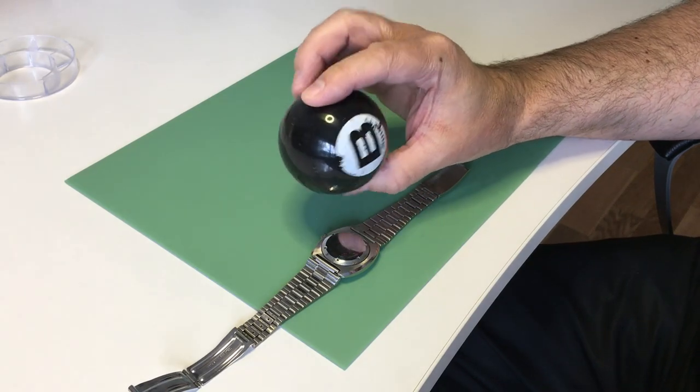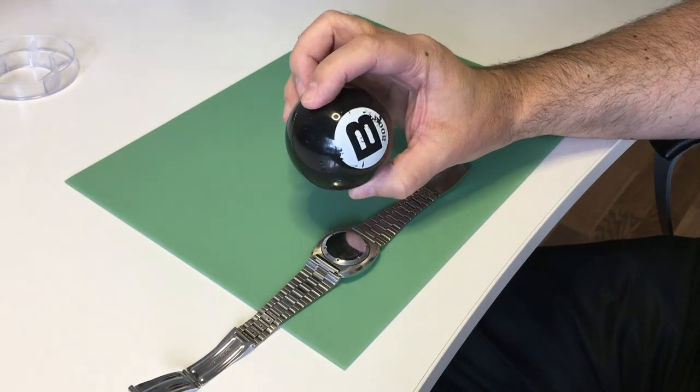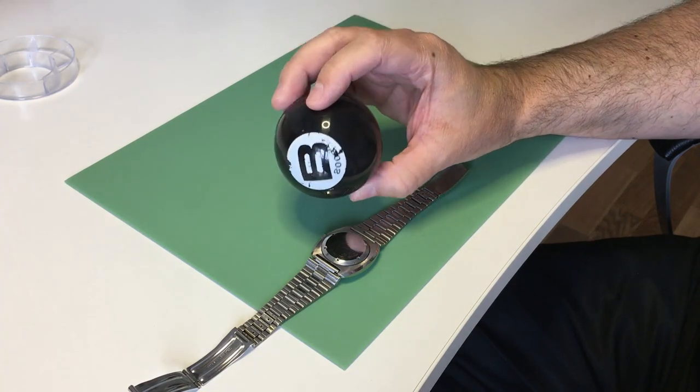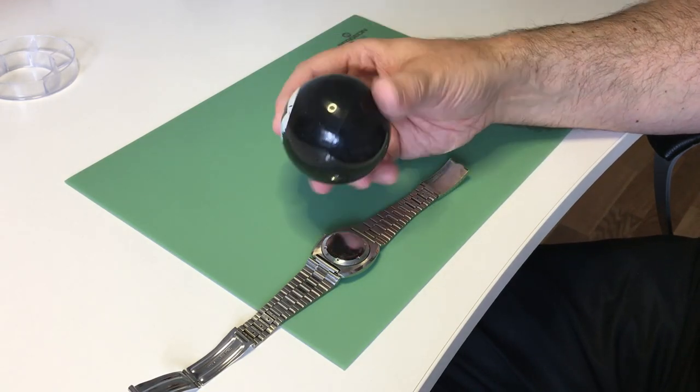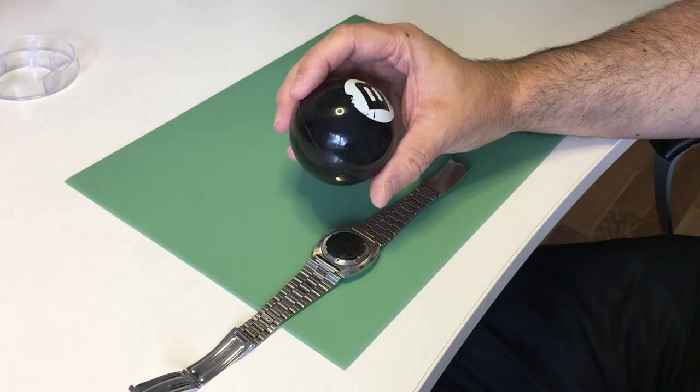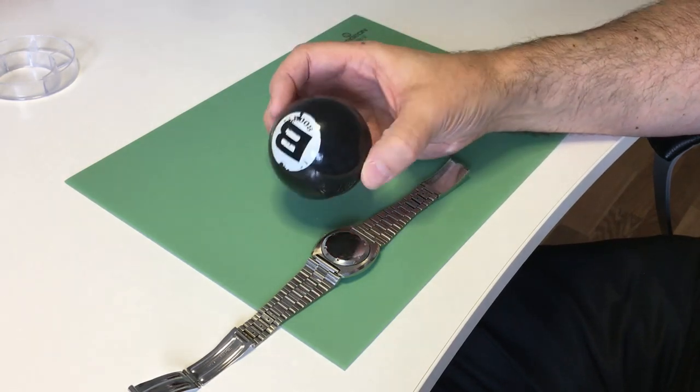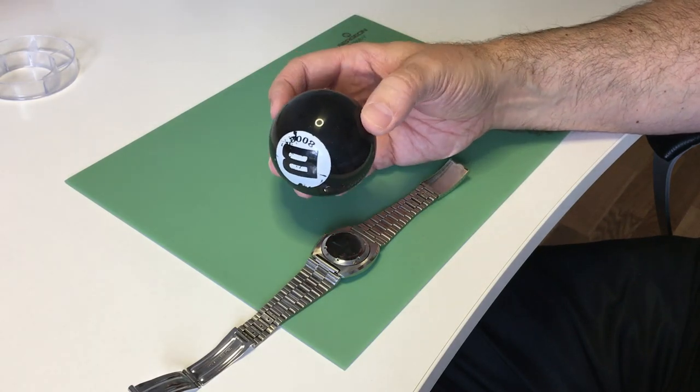What's so great about this ball is that you don't risk scratching your precious watch, which you can do with metal case back remover tools. There's absolutely no risk for damage.